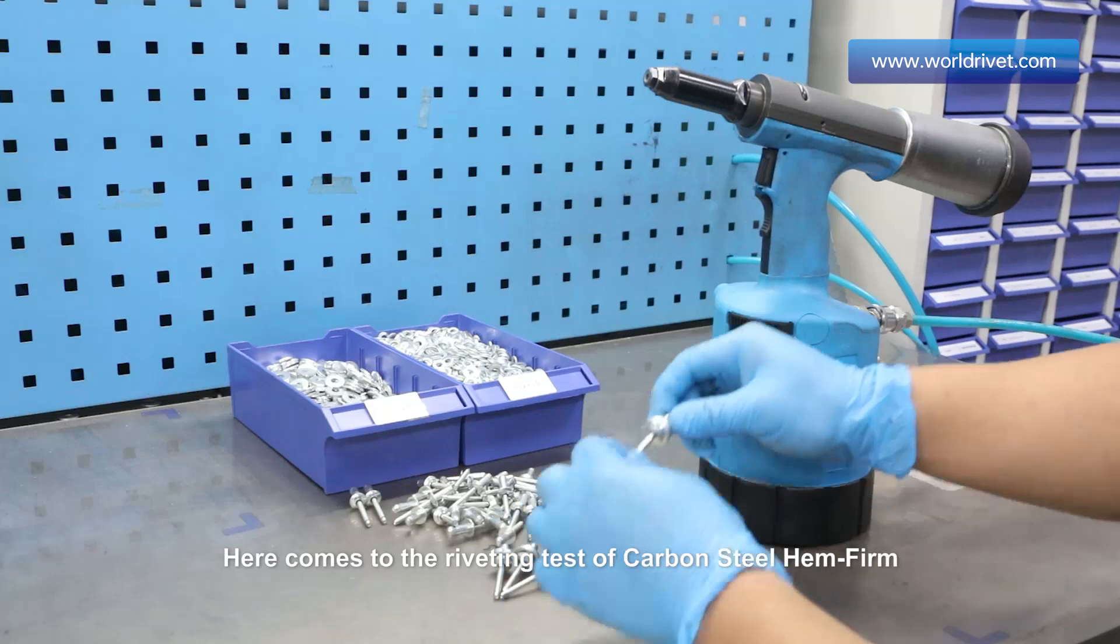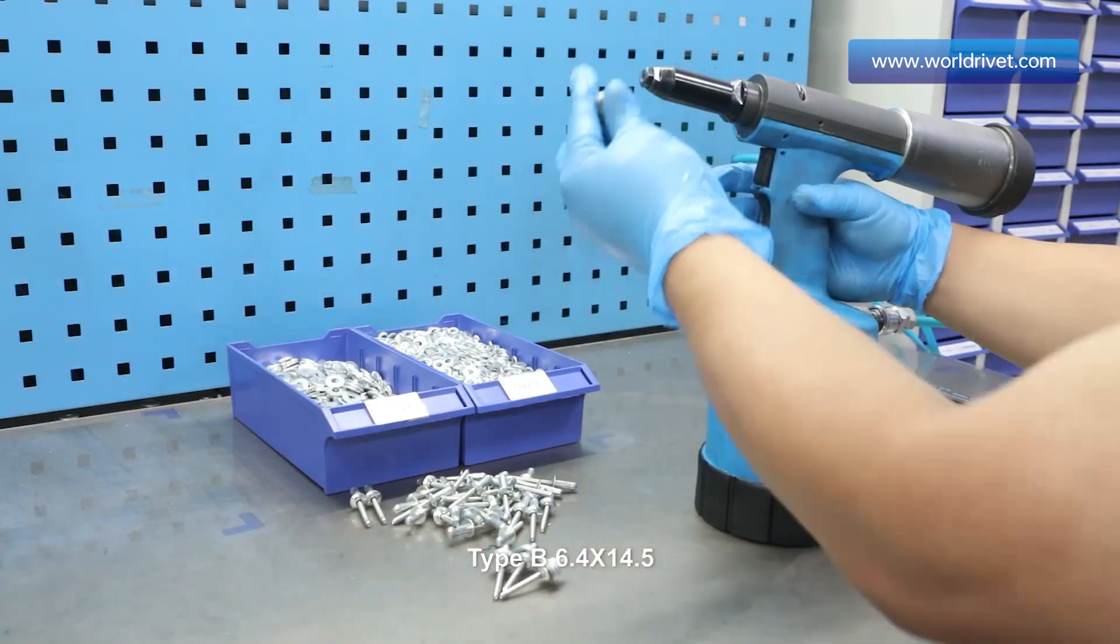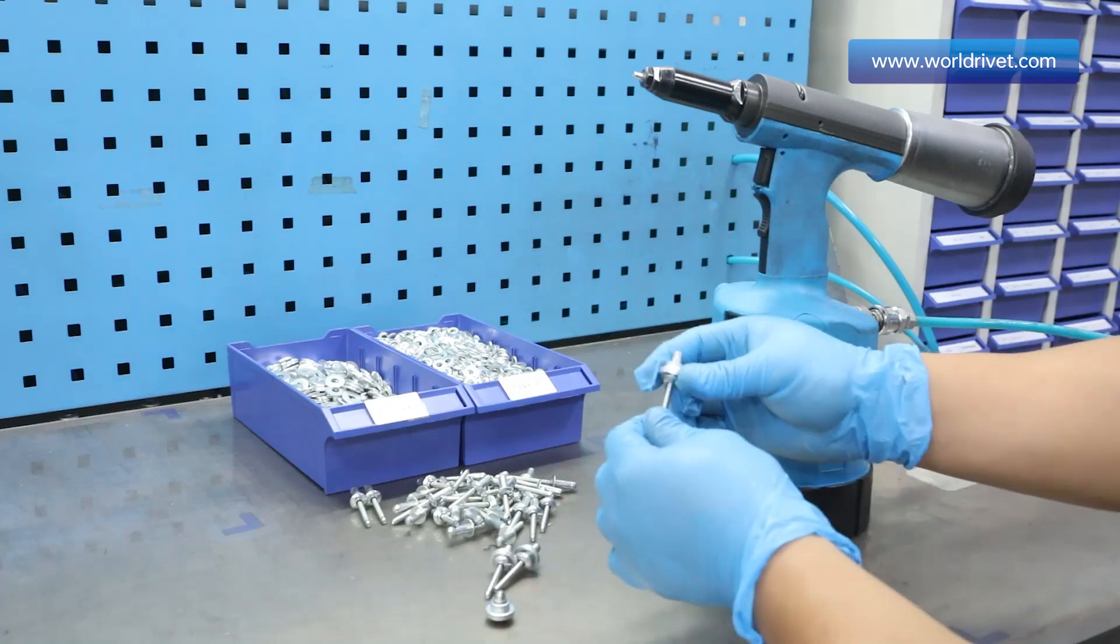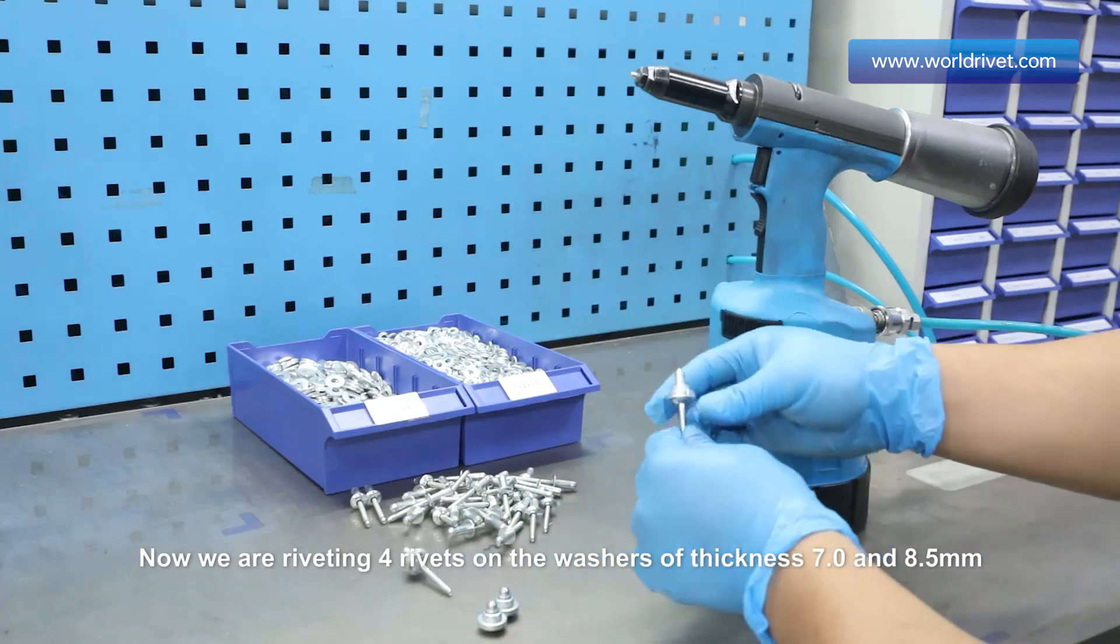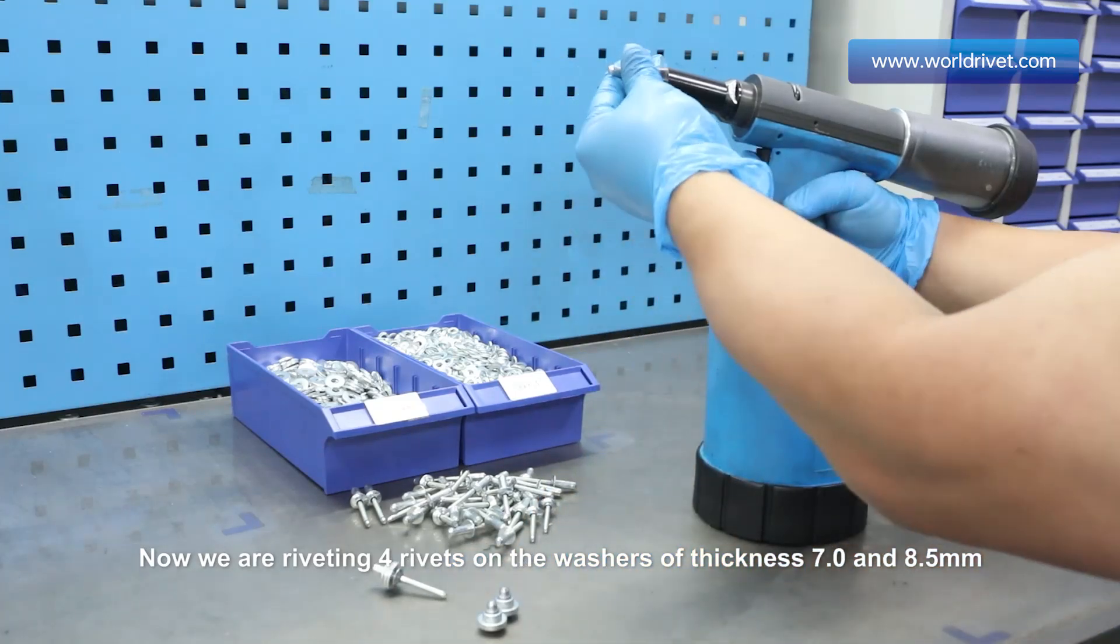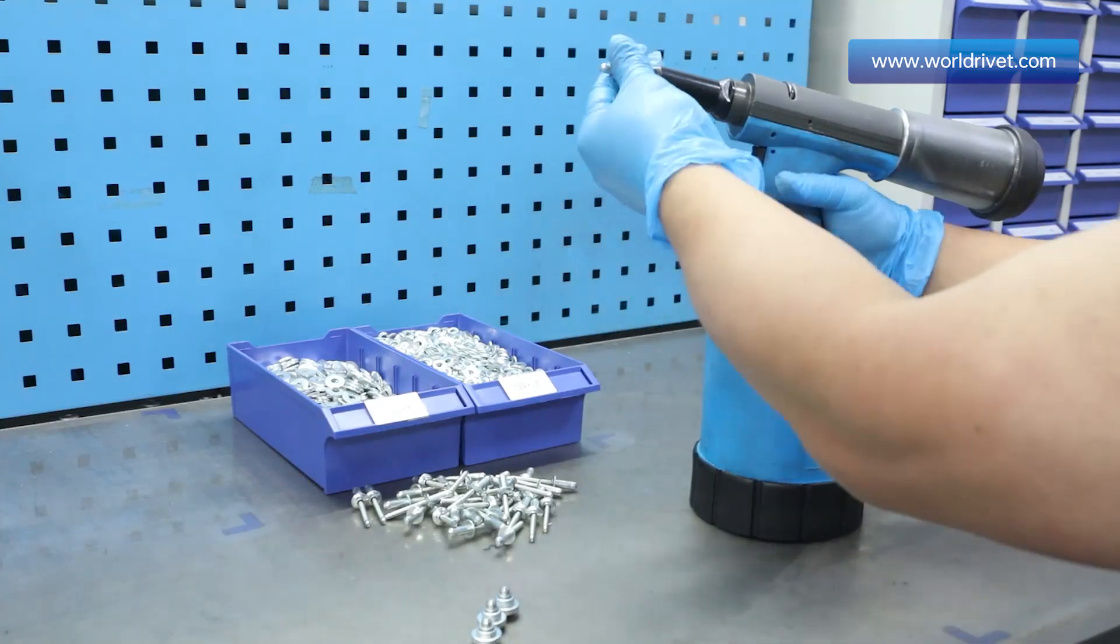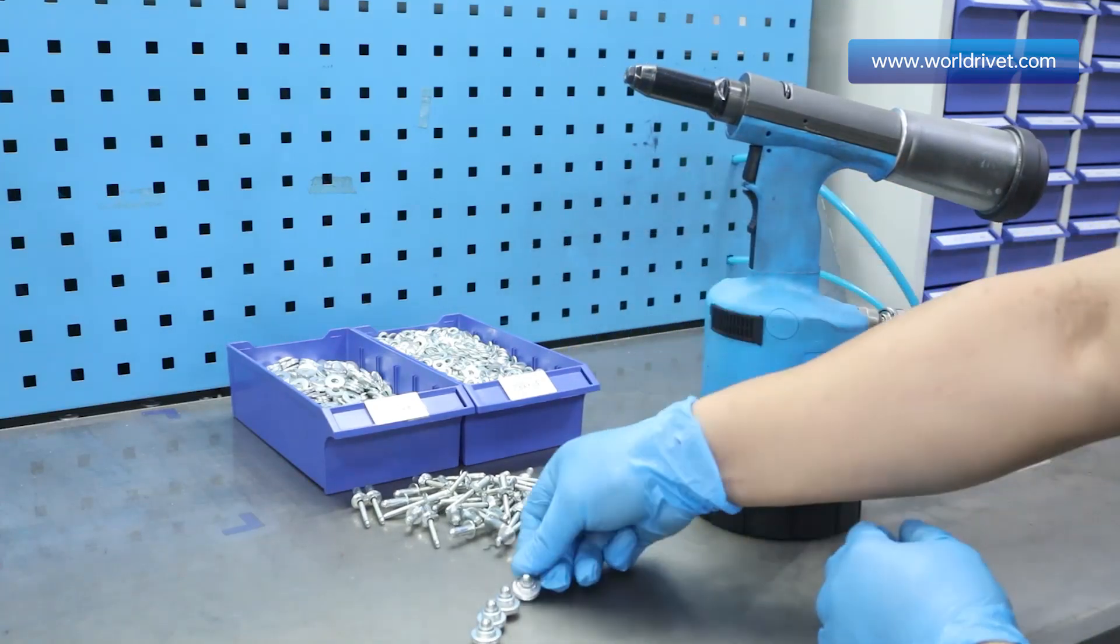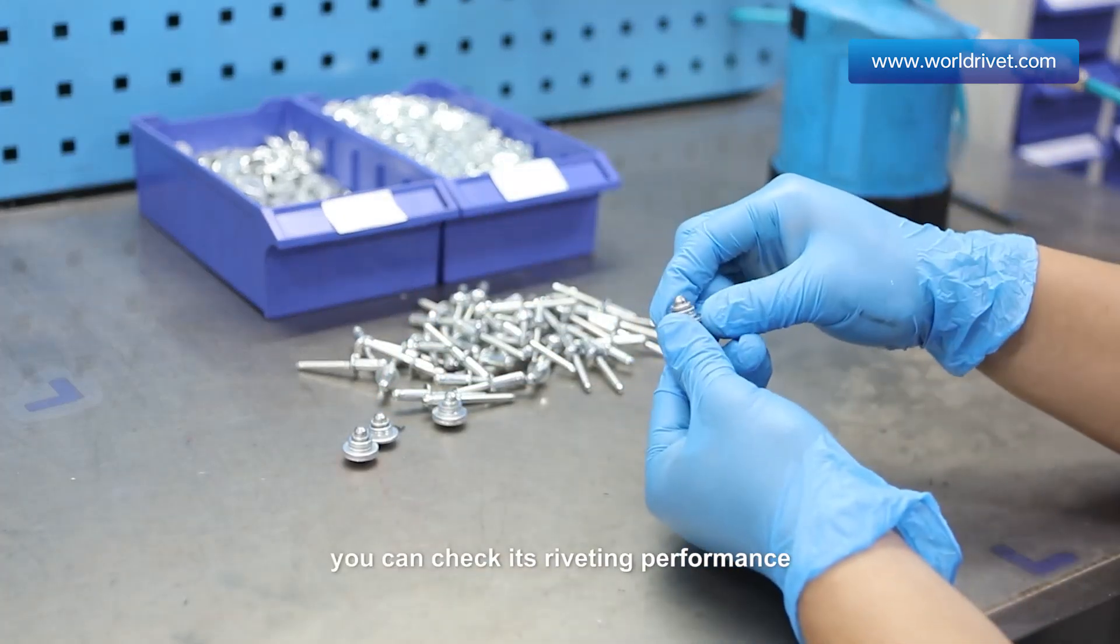Here comes the riveting test of carbon steel hem firm type B 6.4 x 14.5. Now we are riveting 4 rivets on the washers of thickness 7.0 and 8.5 mm. You can check its riveting performance.